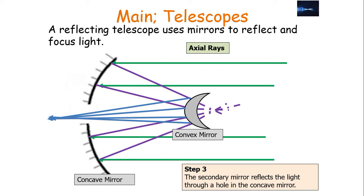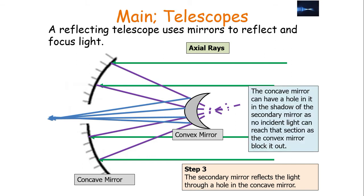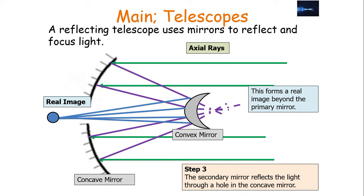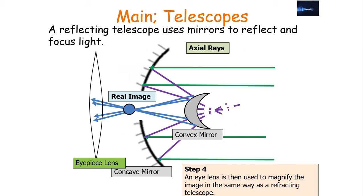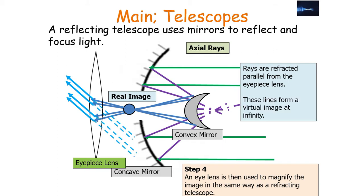The secondary mirror reflects the light through a hole in the concave mirror. The concave mirror can have a hole in it in the shadow of the secondary mirror, as no incident light can reach that section since the convex mirror blocks it anyway. This forms a real image beyond the primary mirror. An eyepiece lens is then used to magnify the image in the same way as a refracting telescope. However, this also means you can get a slight amount of chromatic aberration in the eyepiece lens since refraction is taking place. The rays are refracted parallel from the eyepiece lens, forming a virtual image at infinity.